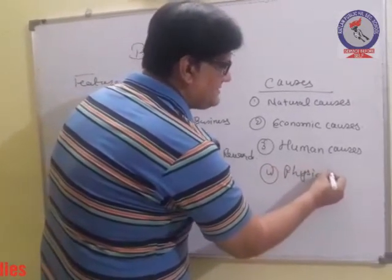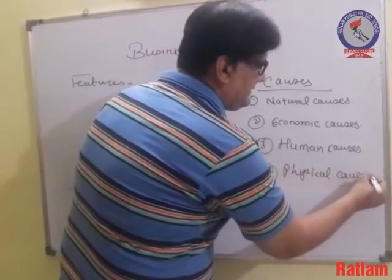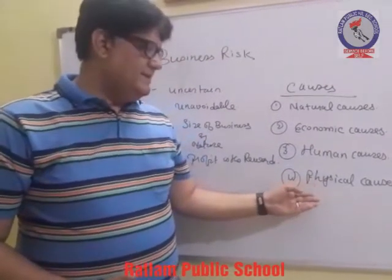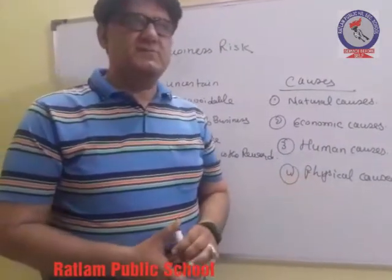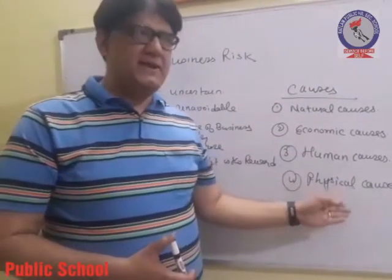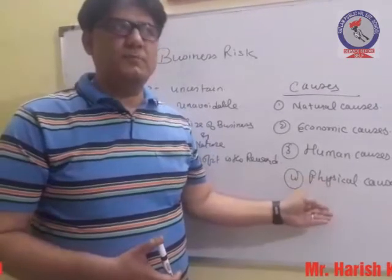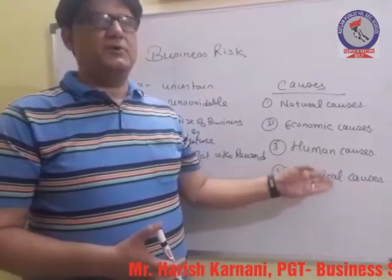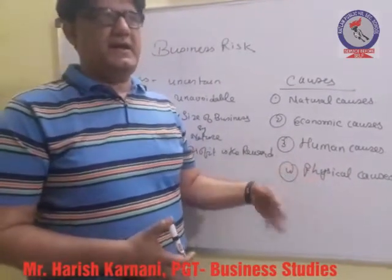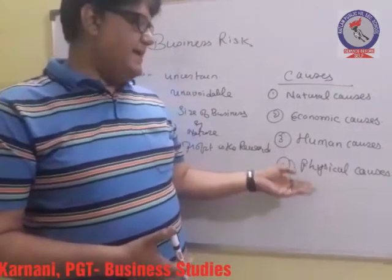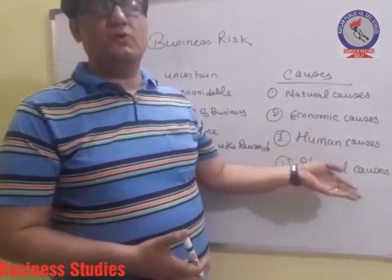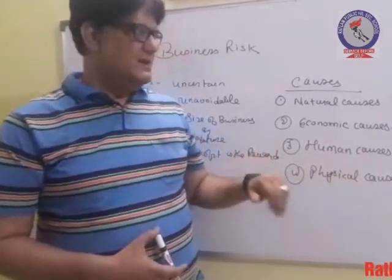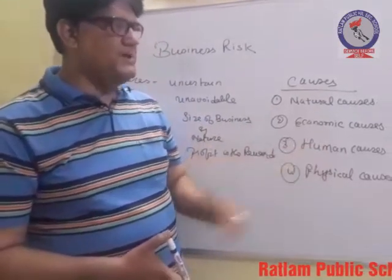Then comes physical causes, which are related with technology or mechanisms. Here we observe that outdated technology is being used, or the machinery is damaged, or assets are not working properly, due to which there is a loss and production does not take place as per the requirements of the businessman. So all these fall under physical causes, and these are the various causes of business risk.